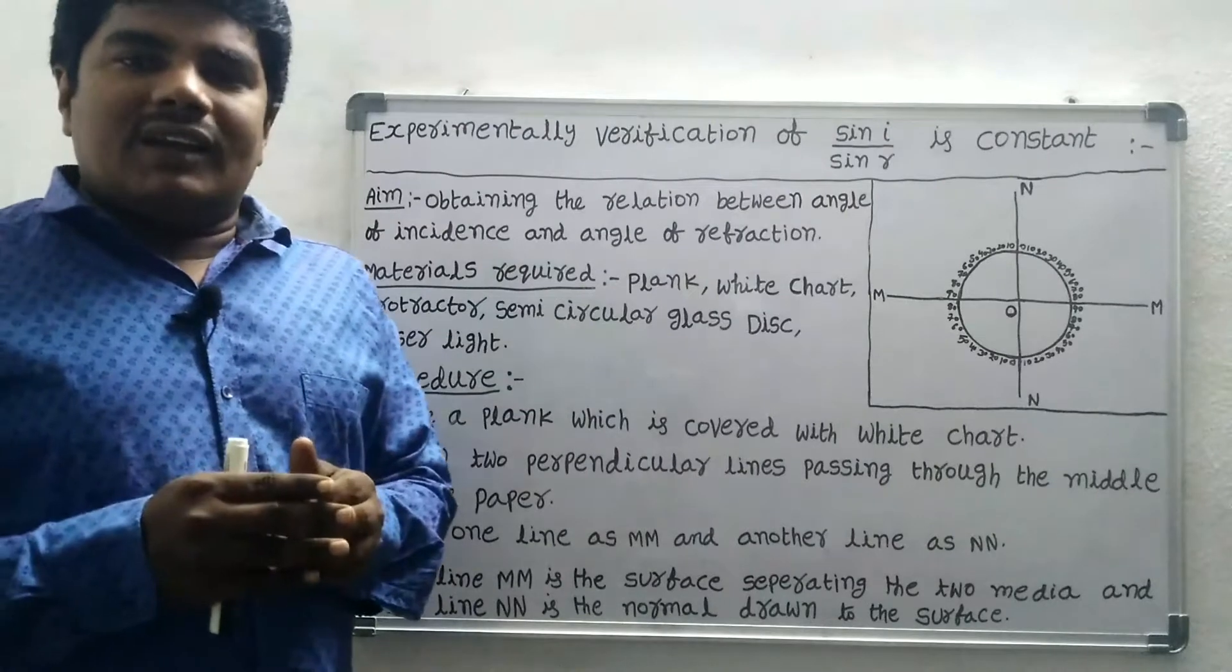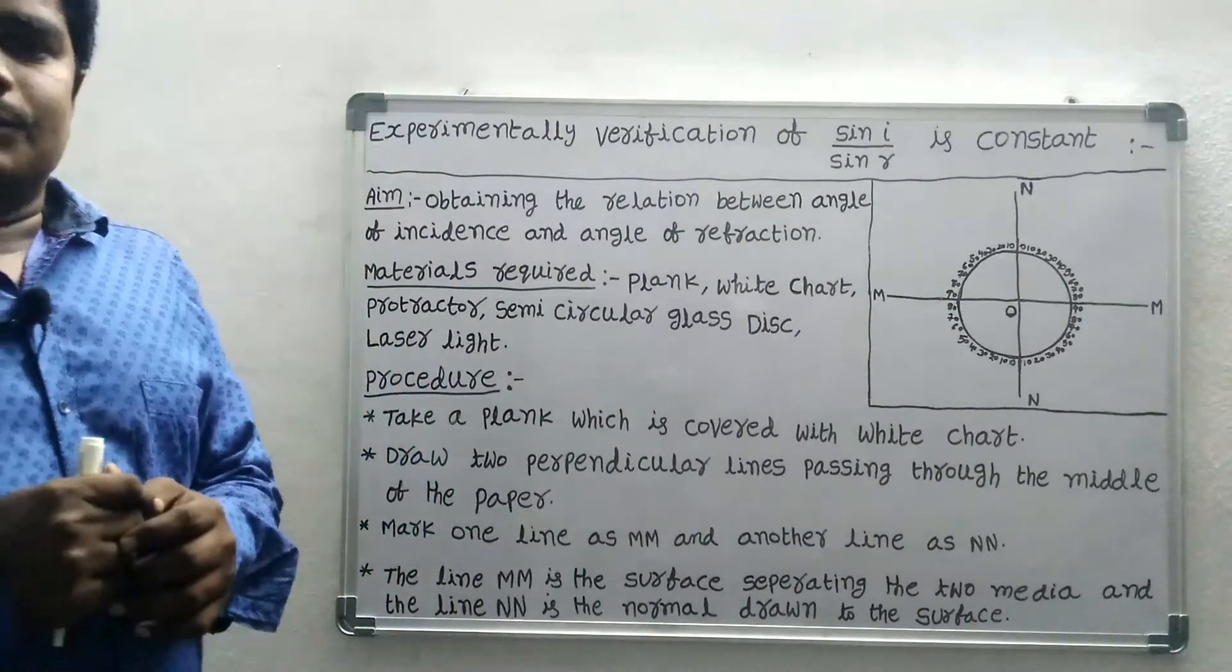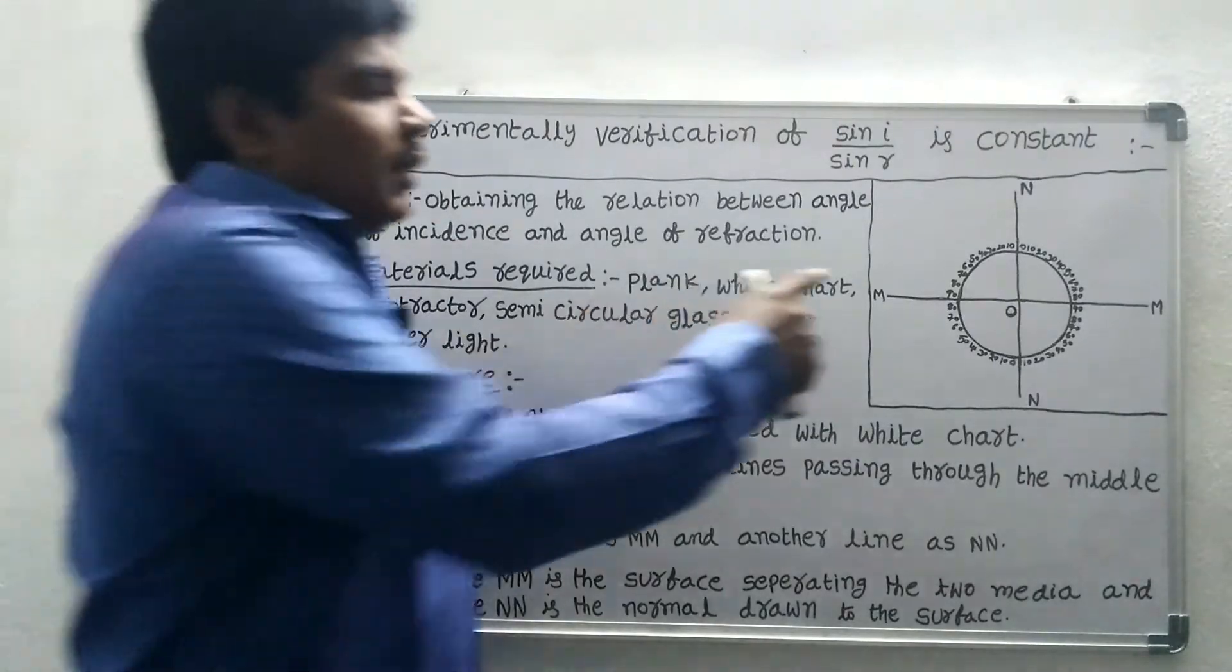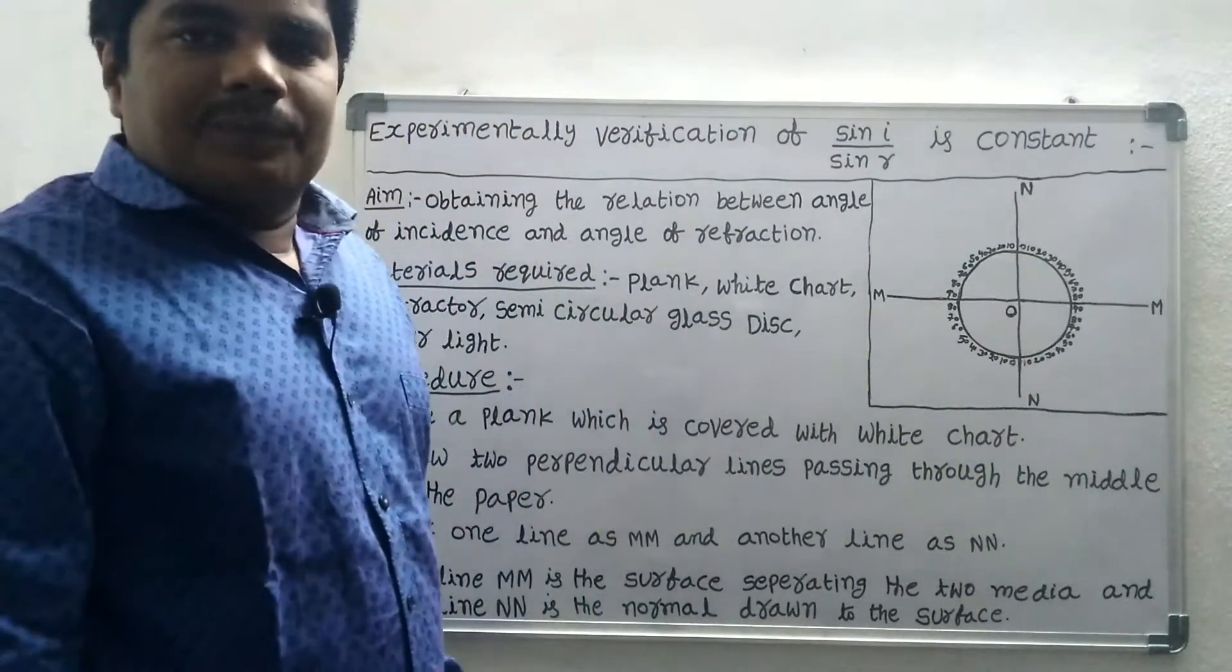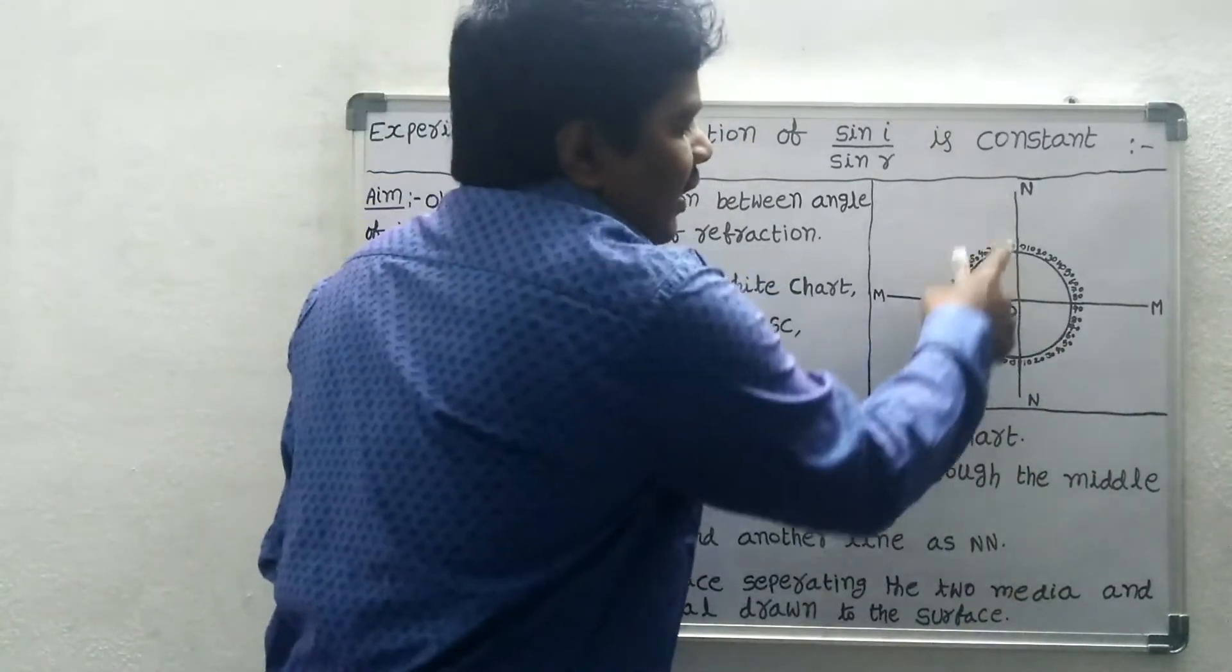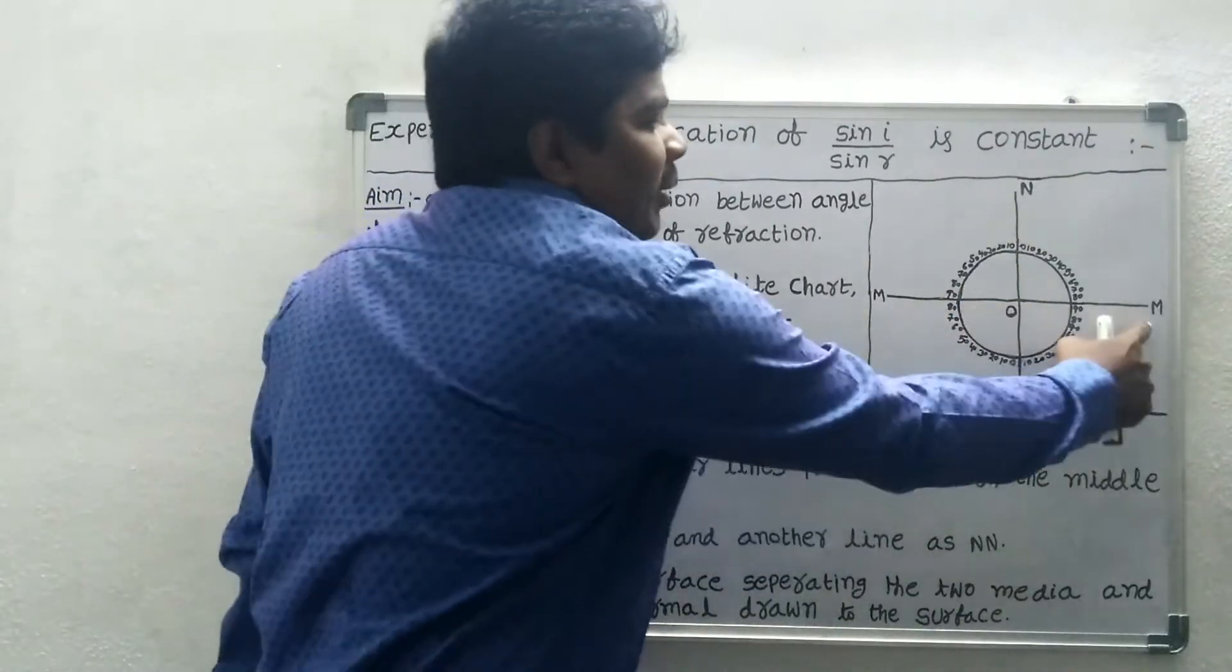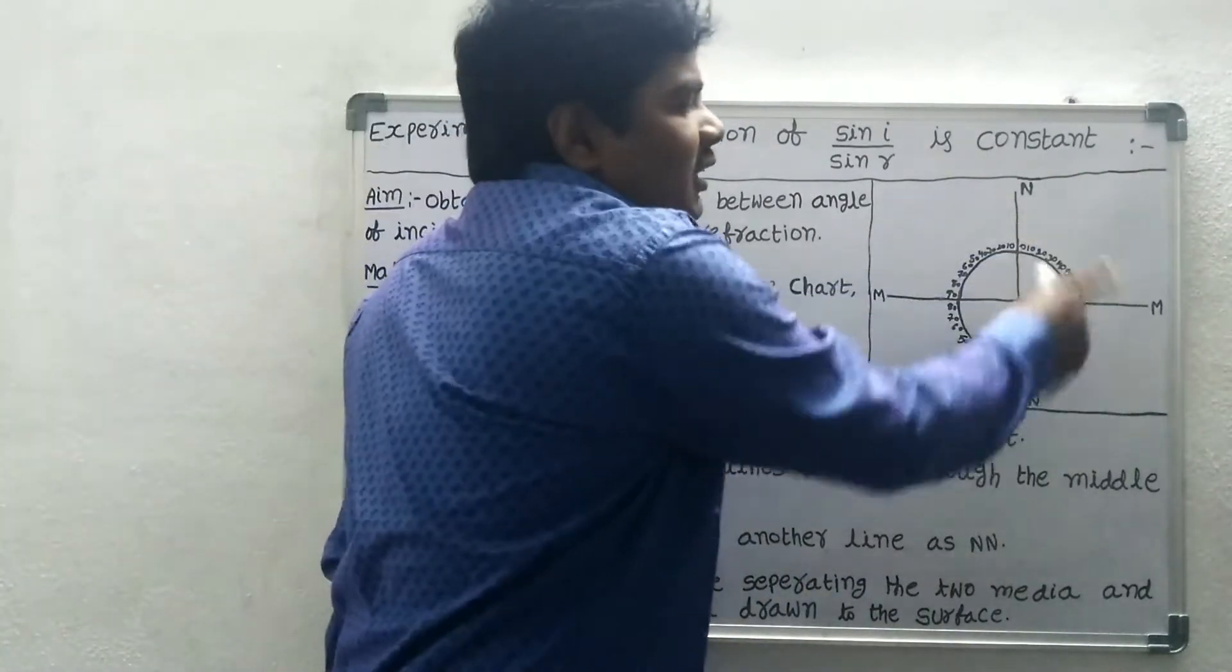We take a plank which is covered with white chart. Draw two perpendicular lines passing through the middle of the paper. Mark one line as MM and the other line as NN. The line MM is the surface separating the two media. The line NN is the normal drawn to the surface.